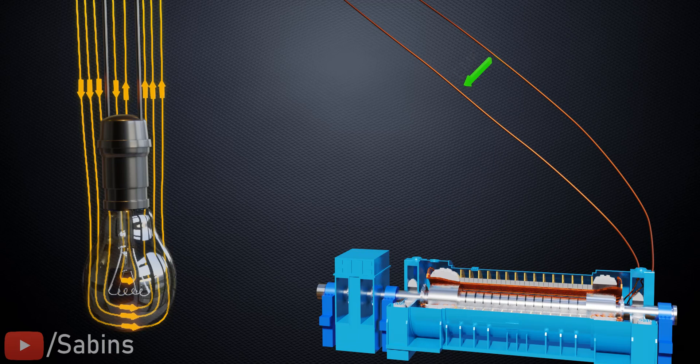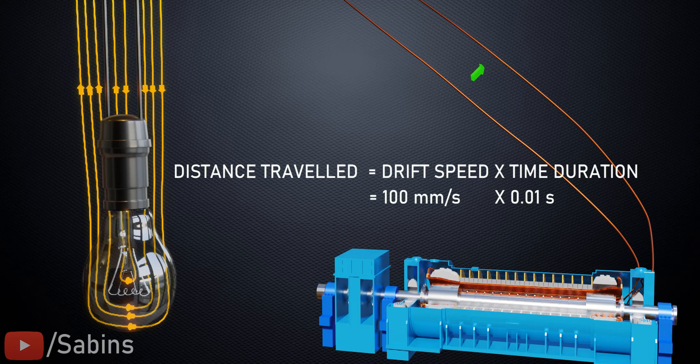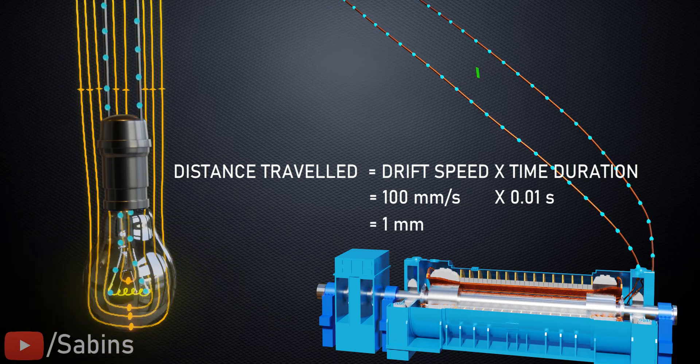If the electricity at your home has a frequency of 50 Hz, which means it will change its direction 100 times every second. Therefore, the electric field will be in one direction for only 0.01 seconds. During this time, the electrons can travel barely one millimeter.